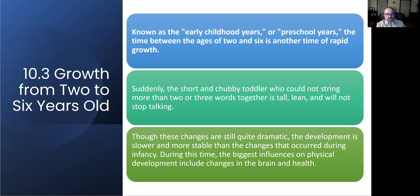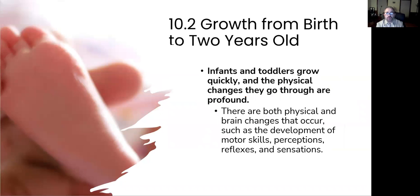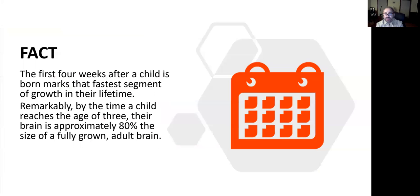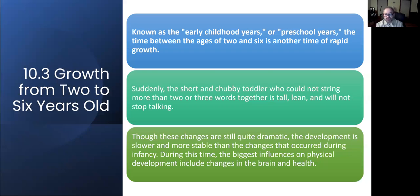Now moving to growth from two to six years — known as the early childhood years or preschool years. The time between ages two and six is another time of rapid growth. Suddenly the short and chubby toddler who could not string more than two or three words together is now tall, lean, and will not stop talking.